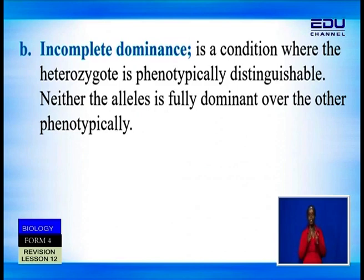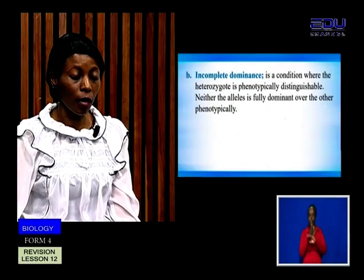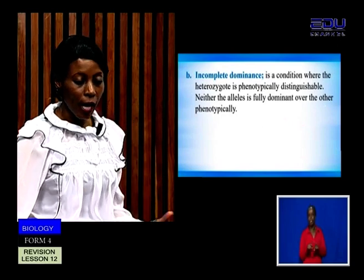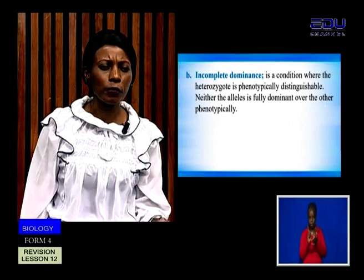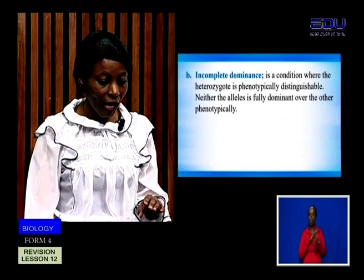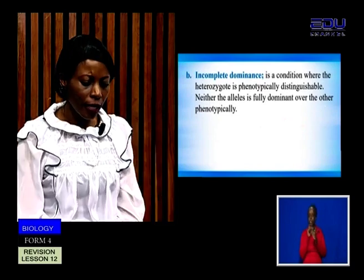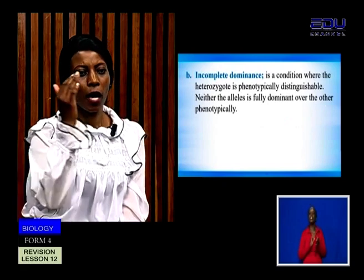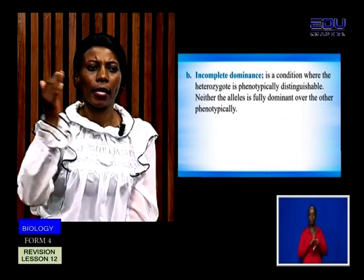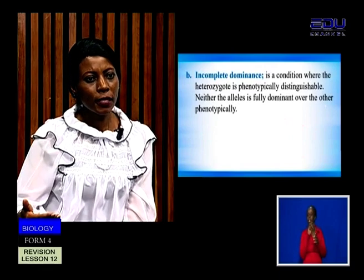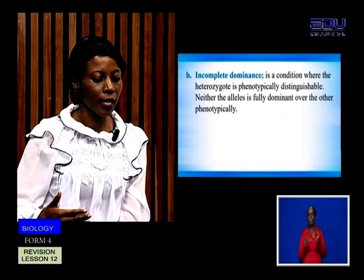A very good example is the four o'clock plant: when a plant with red flowers is crossed with one with white flowers, the offspring will all be pink. Neither of the alleles is dominant over the other — one parent is red, the other is white, and the offspring are pink. This is a very good example of incomplete dominance.